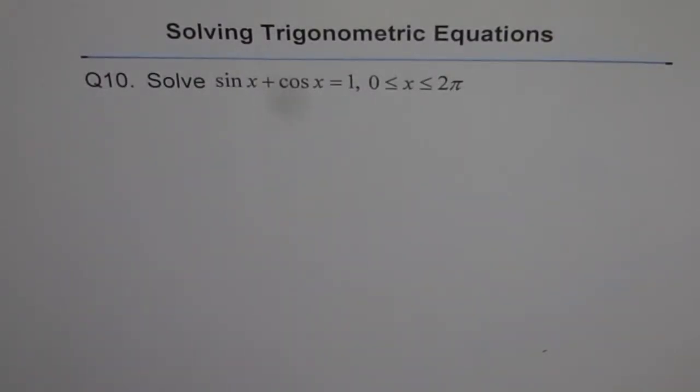Solving trigonometric equations, question 10. Solve sin x plus cos x equals 1, where x is between 0 to 2π.